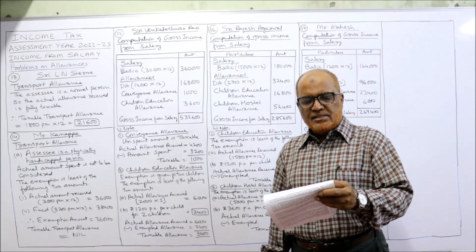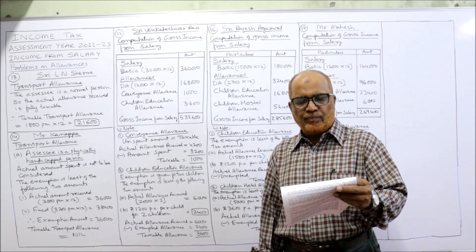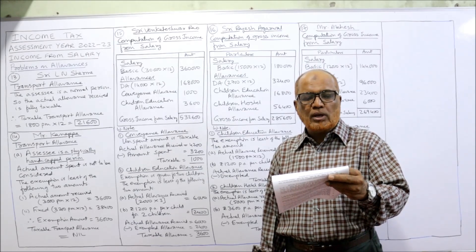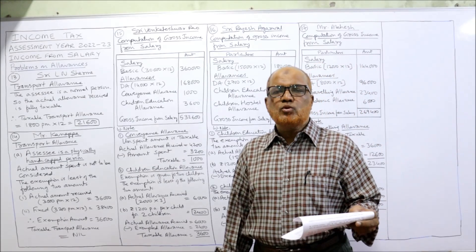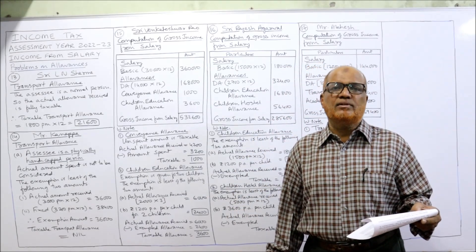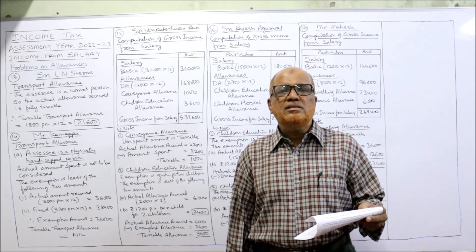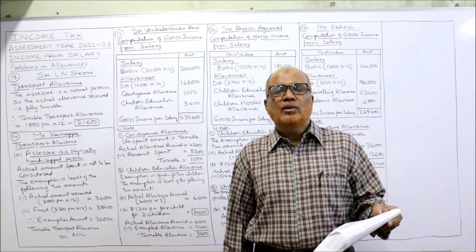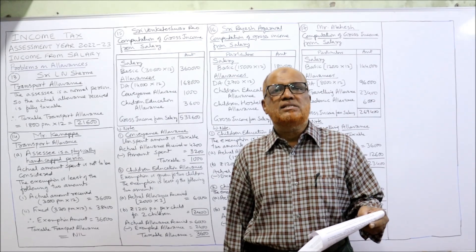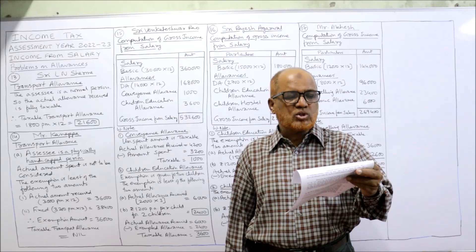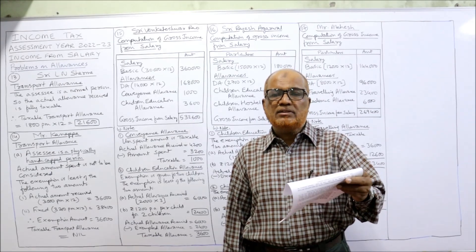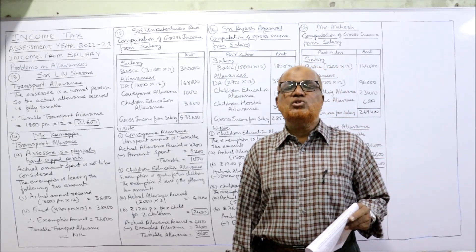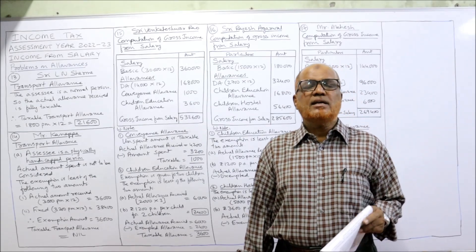15th problem: Sri Venkateshwar Rao is working as a lecturer in Lucknow. His salary particulars: basic pay 30,000 per month, DA 14,000 per month, conveyance allowance 4,200, actual amount spent 3,200. Regarding conveyance allowance, the Income Tax Act says the unspent amount is taxable. So 4,200 minus 3,200 equals 1,000 rupees taxable. New point: children education allowance 2,000 per annum per child for 3 children, so total 2,000 into 3 equals 6,000.